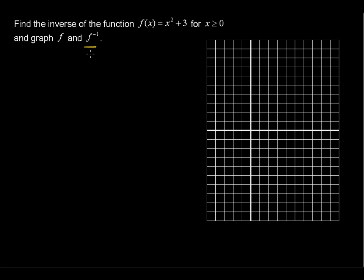Let's first find the inverse function, and the process to do that is to set the original function f of x equal to y. So y equals x squared plus 3.